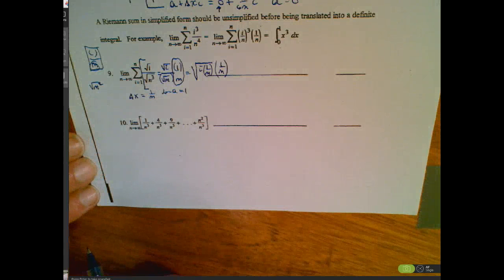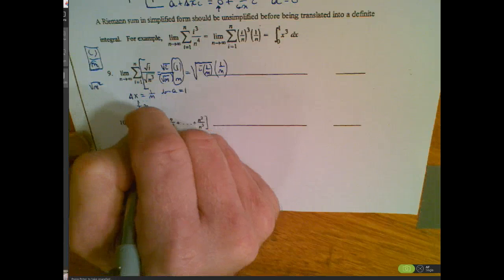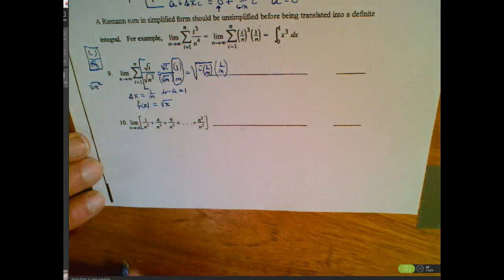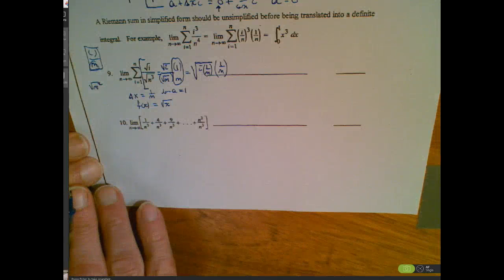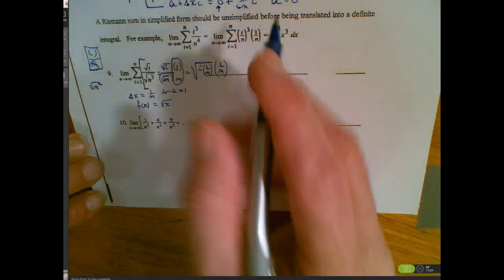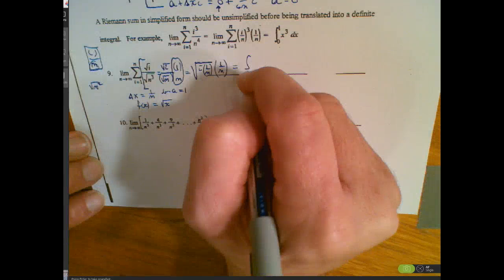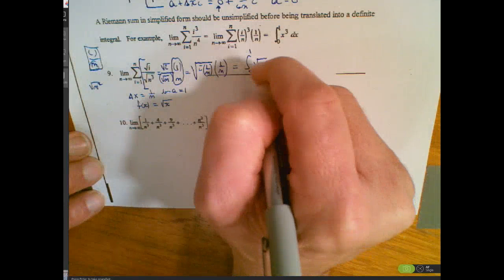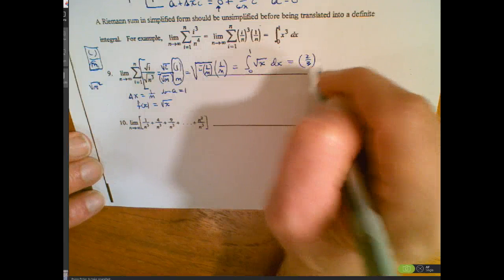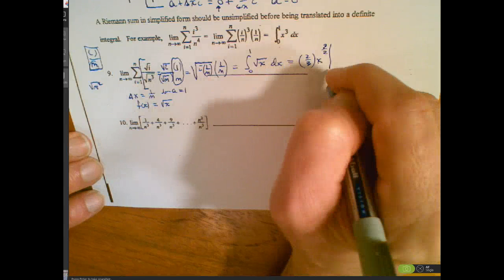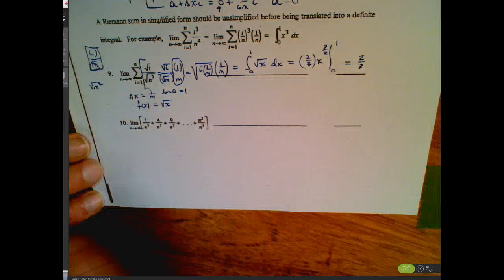My rule looks to be a square root rule: f(x) = sqrt(x). I found a = 0 because there's no constant added to x sub i. So the definite integral goes from 0 to 1 of sqrt(x) dx. Using anti-differentiation: (2/3)x^(3/2) evaluated from 0 to 1. The zero drops out, giving a final answer of 2/3.